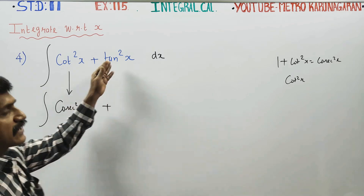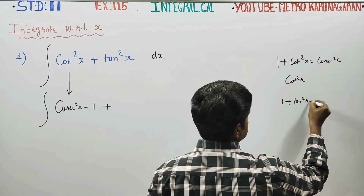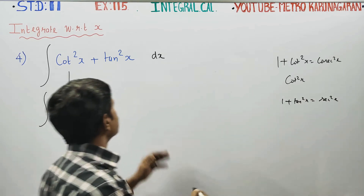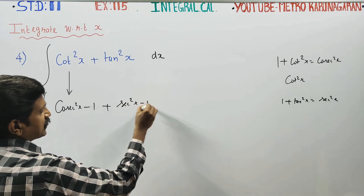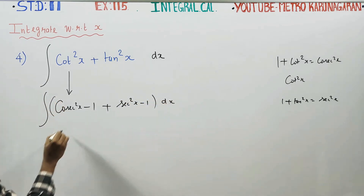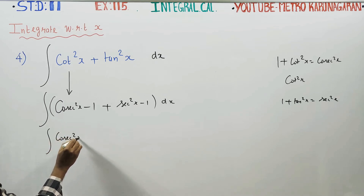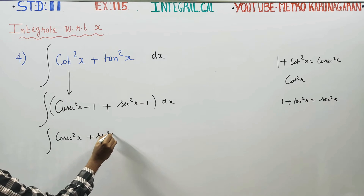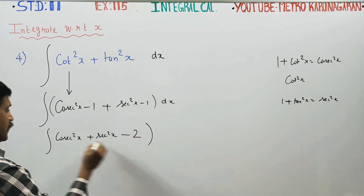That is tan square x. 1 plus tan square x is secant square x. So tan square x is sec square x minus 1. Then the integration becomes: cosecant square x plus sec square x minus 1 minus 1, which simplifies to minus 2, all with dx.